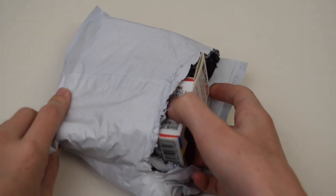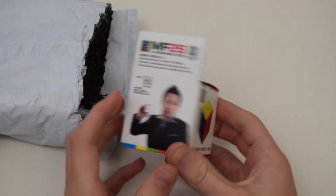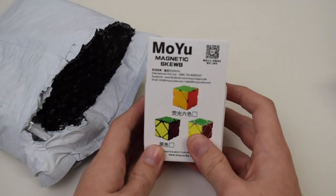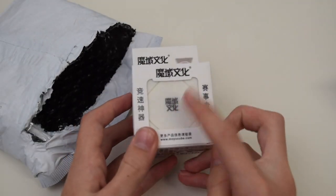So in here we have the MF2S 2x2 in stickerless, then we also have the new Moyu Magnetic Scube also in stickerless.